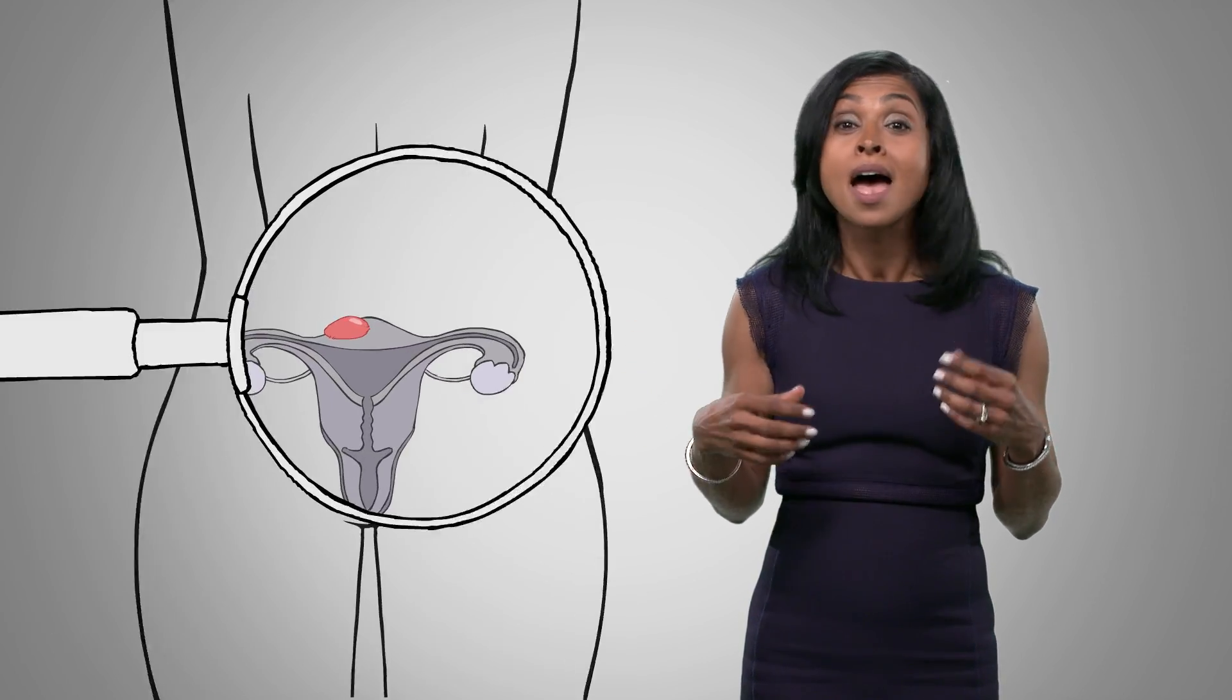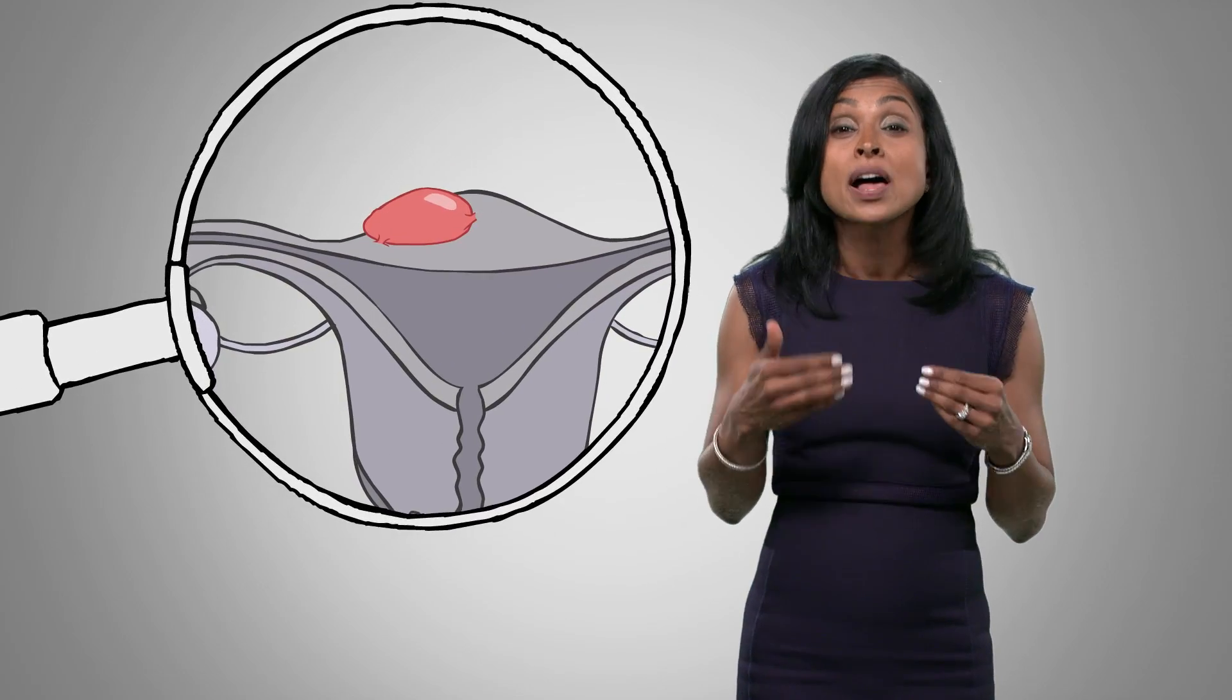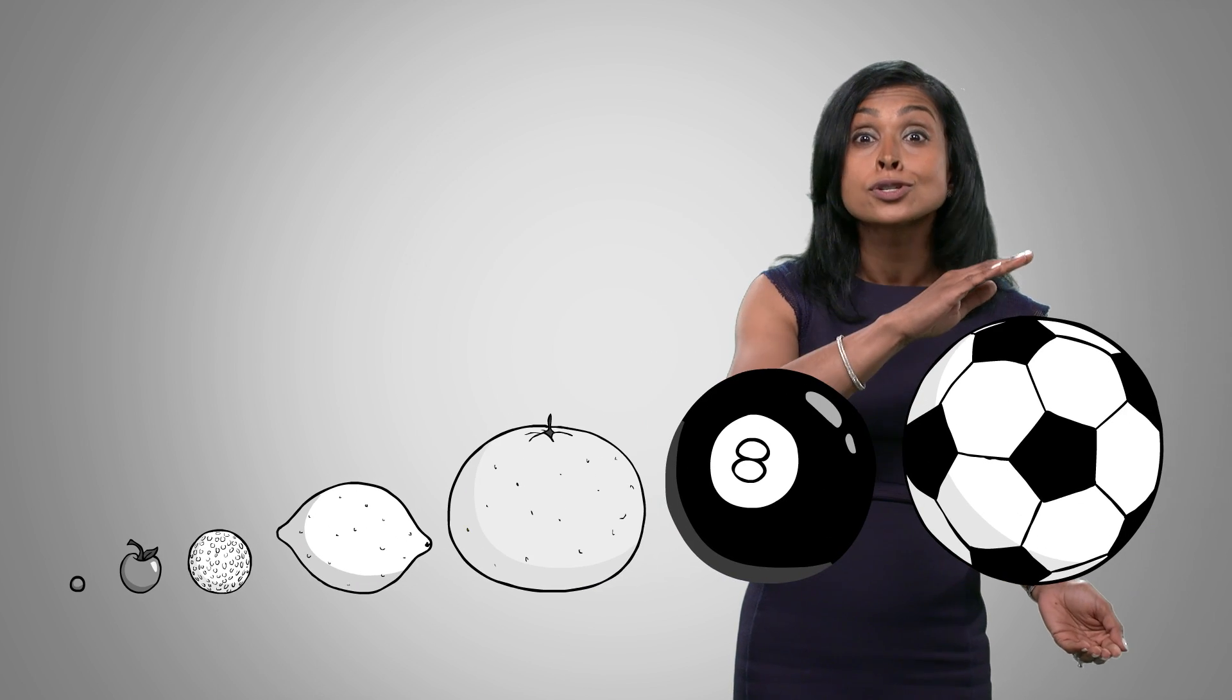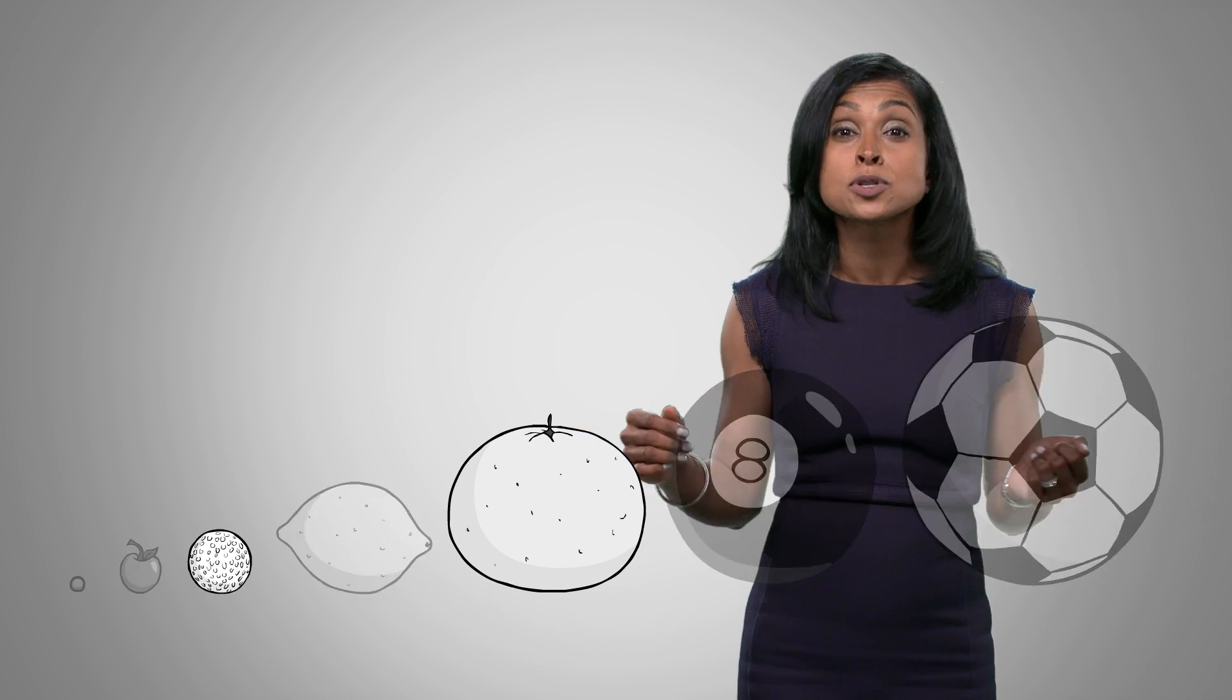Fibroids are compact tumors that are made of smooth muscle cells and fibrous connective tissue that develop from the uterine muscle. They could be as small as a pea to as large as a soccer ball, but the majority are between the size of a golf ball and a grapefruit.